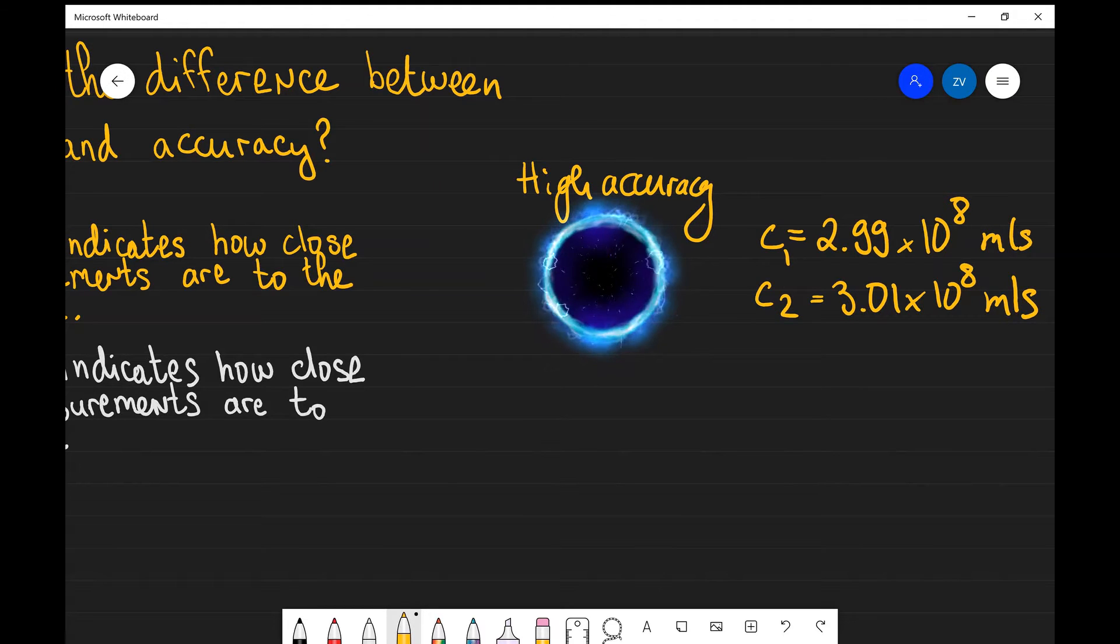These are both really accurate measurements because they're very close to the actual true value of the speed of light, which we're going to assume for the purposes of three significant figures is 3.00 × 10^8 meters per second. I know that in reality it's 2.997 and so on quite a few digits, but this is just for illustration purposes.